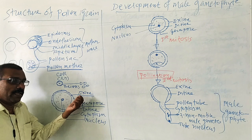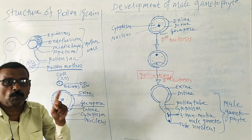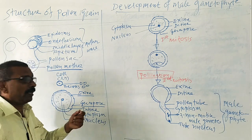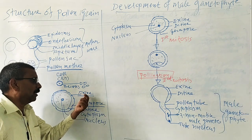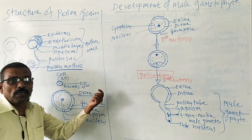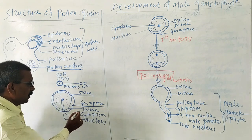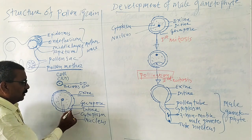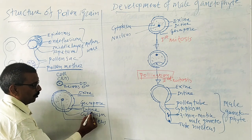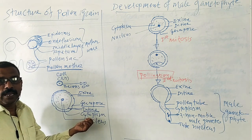The exine is made up of a special chemical known as sporopollenin. This sporopollenin avoids decaying of the pollen grain due to environmental factors. Inside the exine there is an inner layer known as the intine.